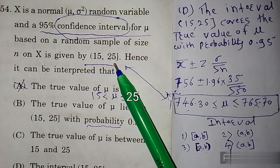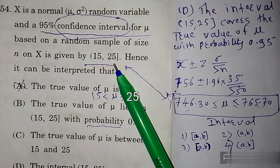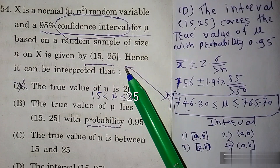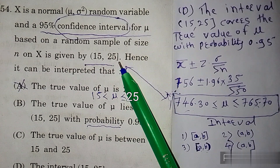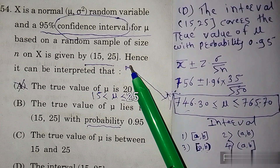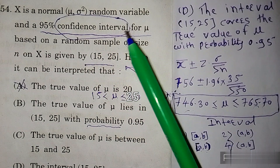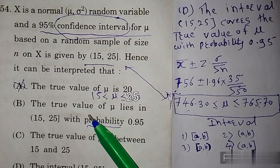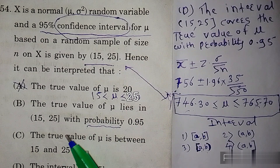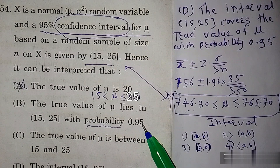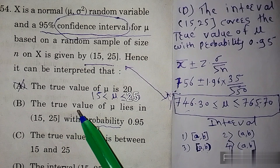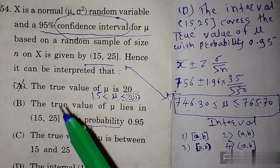Question में semi-open interval दिया हुआ है जिसका meaning है कि 25 तो involved होगा लेकिन 15 involved नहीं होगा। यह दर्शाता है कि 15 और 25 covers करेंगे mu को। यह confidence interval का question है। Option B कहता है कि mu lies in 15 to 25 with probability 0.95 — लेकिन mu वहाँ हो भी सकता है और नहीं भी।